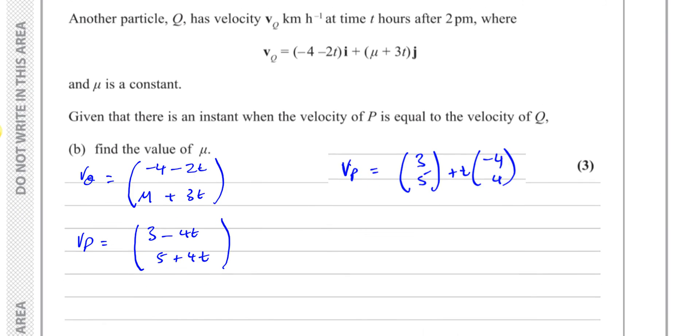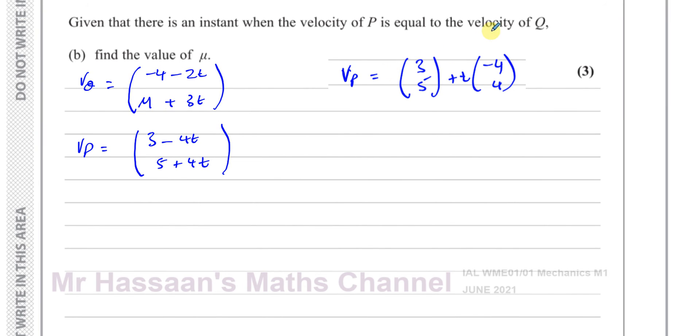Now they've told us there is an instant when the velocity of P equals the velocity of Q. So I'm going to equate these two. Minus 4 minus 2t and mu plus 3t equals 3 minus 4t, 5 plus 4t.